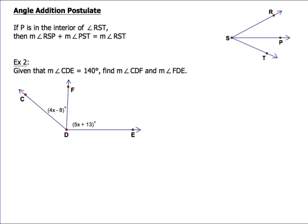Now let's take a look at the angle addition postulate. The angle addition postulate says if P is in the interior of angle RST, then the measure of angle RSP plus the measure of angle PST is equal to the measure of angle RST. This is very straightforward, and it's going to seem very similar to the segment addition postulate. Let's take a look at example number two. Given that the measure of angle CDE is 140 degrees, find the measure of angle CDF and the measure of angle FDE.